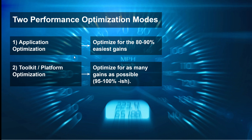There are typically two performance optimization modes developers are in. The first is application optimization, where you typically optimize for the easiest 80–90% of gains; the last 10–20% are sometimes too expensive to justify within a single business case. The second is toolkit or platform optimization, where you optimize for as many gains as possible because the toolkit is used by many people or organizations, making it easier to justify investing in the last 1–5% performance optimizations.